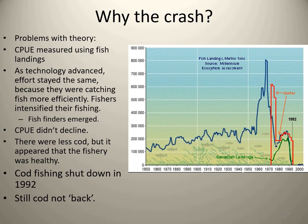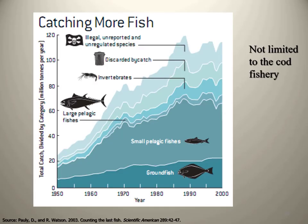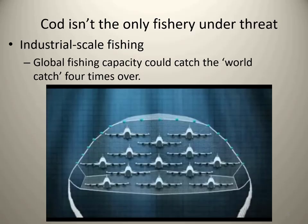Cod fishing was shut down in 1992 and the stock still hasn't recovered. Increasing exploitation of the world's fisheries is not limited to the cod fishery. Cod isn't the only fishery under threat. Industrial-scale fishing, which many now practice, means global industrial fishing capacity could catch the world's entire catch four times over. We have the technology and capacity to catch everything in our oceans — not once, but four times over.